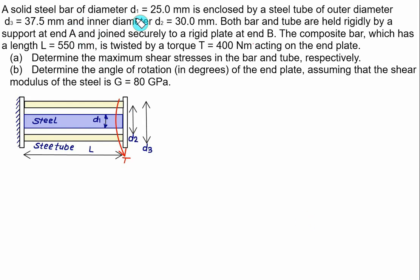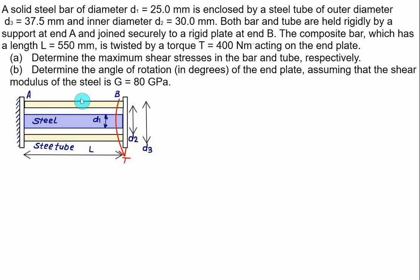A solid steel bar of diameter D1 = 25 mm is enclosed in a steel tube of outer diameter D3 = 37.5 mm and inner diameter D2 = 30 mm. Both the bar and the tube are held rigidly by a support at end A and joined securely to a rigid plate at end B. The composite bar, which has a length L = 550 mm, is twisted by a torque T = 400 Nm acting on the end plate. We need to determine the maximum shear stress in the bar and the tube, and the angle of rotation of the end plate.